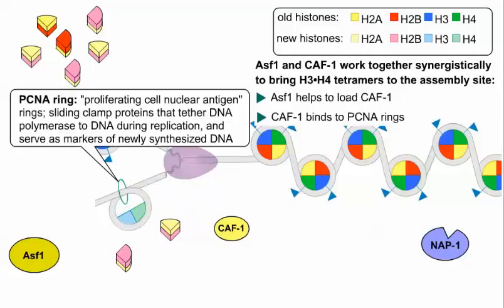PCNA stands for proliferating cell nuclear antigen. And this sliding clamp protein helps to tether DNA polymerase to DNA during replication. The PCNA rings are left on the DNA by the passing replication machinery, and therefore serve as markers of newly synthesized DNA.